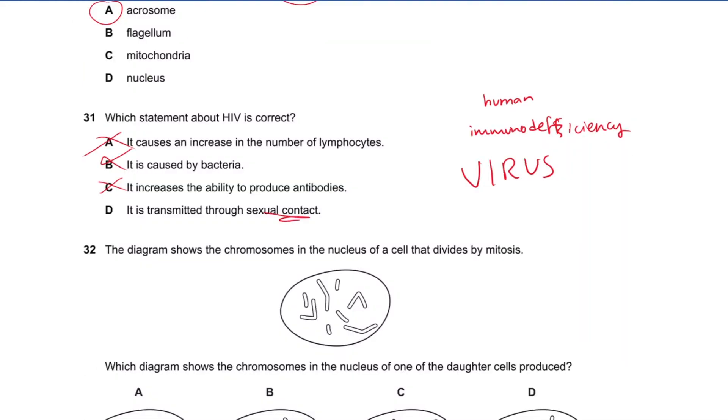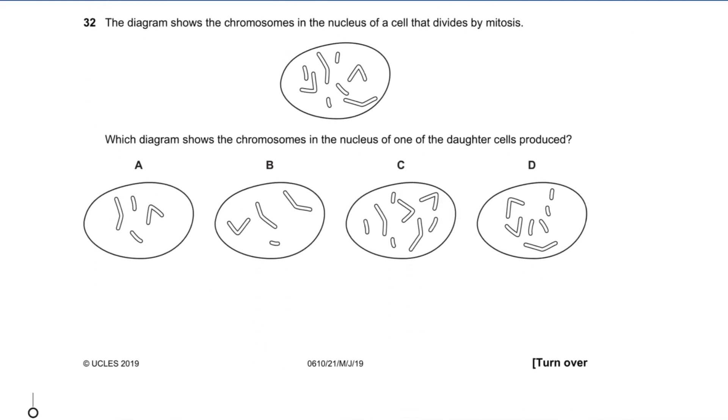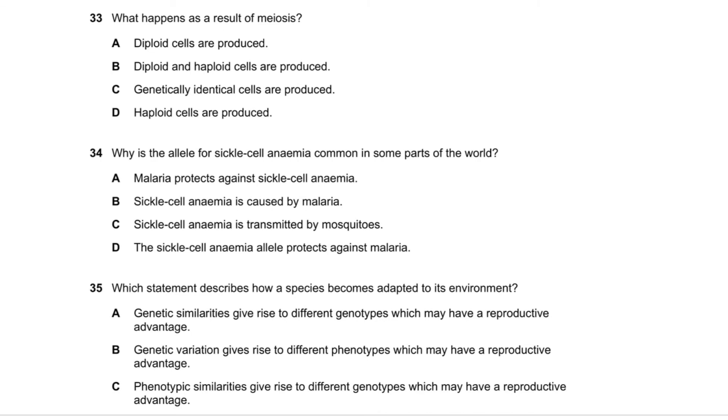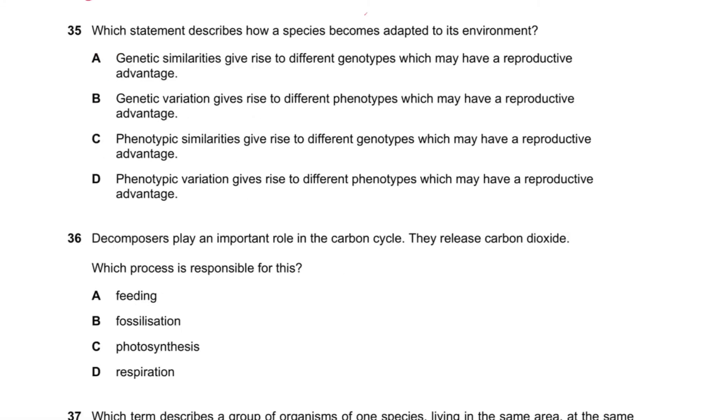Question number 32 says the diagram shows the chromosomes in the nucleus of a cell that divides by mitosis. Mitosis produces genetically identical daughter cells, so it will have the same exact chromosomes. Obviously it's not this one, it's two less, not this one either. One of these two has this one, okay, this one, yeah it's this one. Question number 33 says what happens as a result of meiosis? Diploid cells are produced? No, it produces haploid cells. Diploid and haploid cells are produced? No, it produces haploid cells. Genetically identical? No, they're different. Haploid? Yes. Question number 35 says which statement describes how a species becomes adapted to its environment? To adapt to its environment it can't change its phenotype, which is basically how it looks. It's going to have to change its actual genes. So obviously it's not similarities, you have to be different to adapt. You have to change genetically so you can have a reproductive advantage.